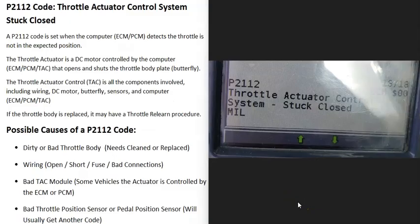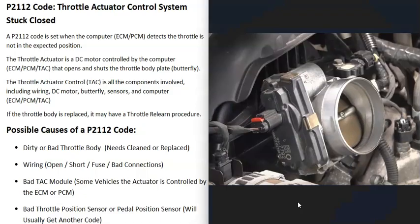Today I'm talking about a P2112 code — what it is and how you can go about fixing it. A P2112 code is a throttle actuator control system stuck closed. Basically, located up on top of the engine on the intake is what's called a throttle body.